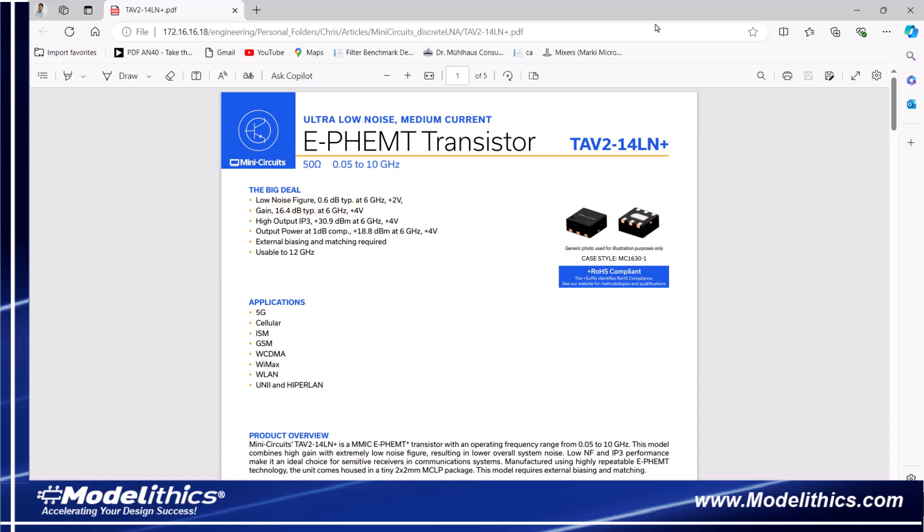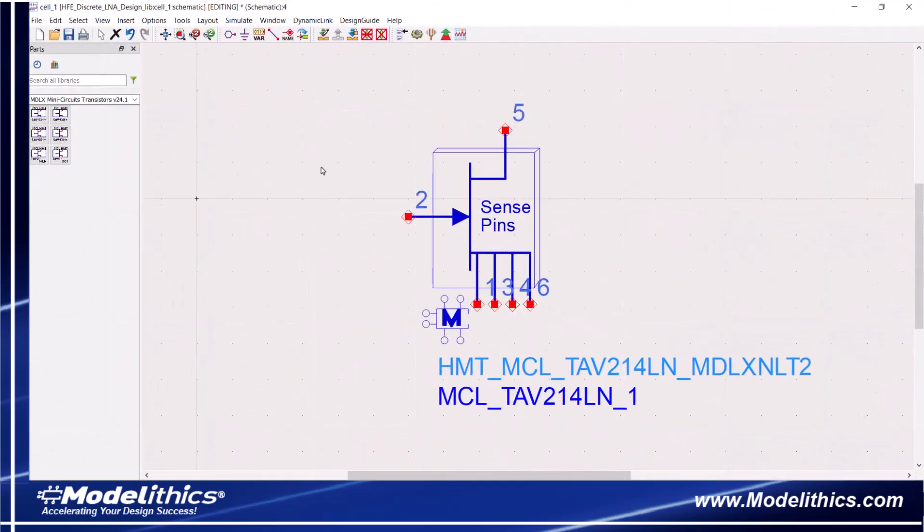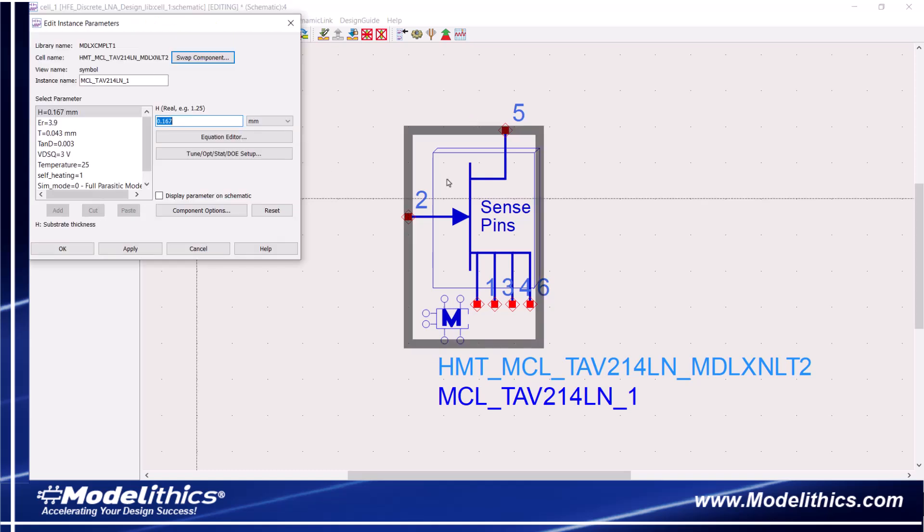Moreover, this device comes in a 2x2 mm package. Monolithics offers a nonlinear simulation model for the TAV2-14LN Plus transistor.